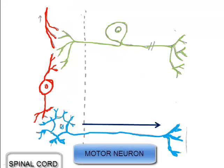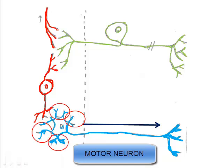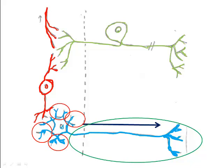Motor neurons transmit impulses away from the central nervous system to muscles and glands. They're stimulated by interneurons. Motor neurons have short dendrites and long axons.